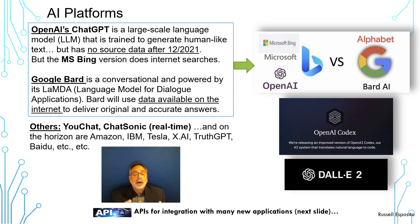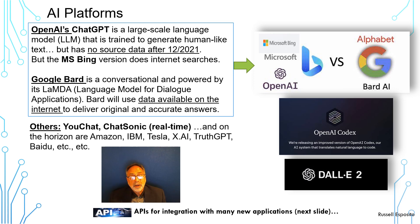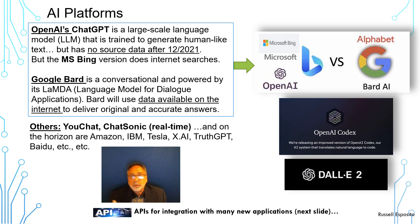OpenAI's ChatGPT is based on GPT-3. It's a large-scale language model that creates human-like text, but it has no information past December 2021, so it's limited in its answers. Microsoft has invested very heavily in OpenAI, essentially owns part of it now, and will use the GPT-3 and probably GPT-4 engine as part of its Microsoft Bing search engine. Most people don't use Bing day-to-day — they use Google or DuckDuckGo or Brave — so Microsoft wants to change that by adding AI to provide summarized answers.